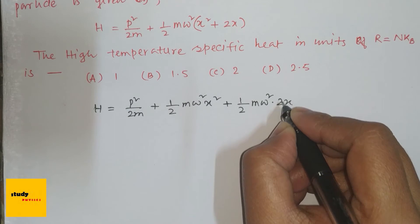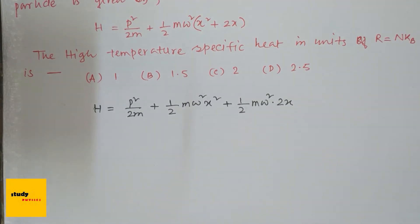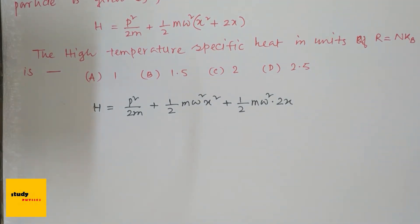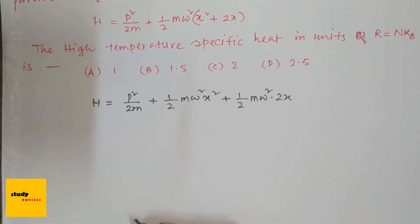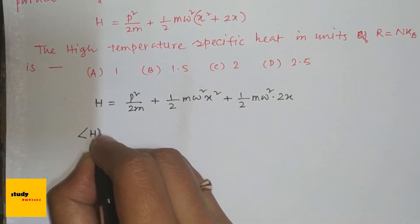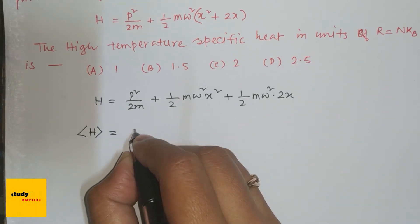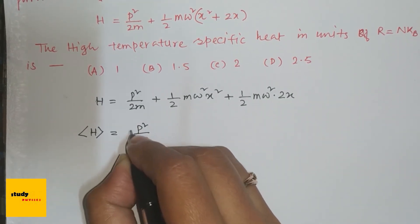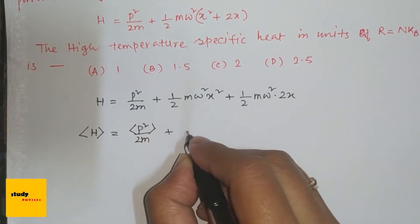So for the specific heat, first we have to know the equipartition theorem. And according to the equipartition theorem, we have to take the average value of this Hamiltonian. So average H equals p squared by 2m, half m omega squared x squared, plus half m omega squared 2x.